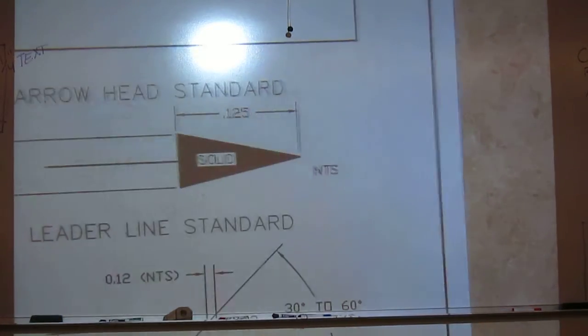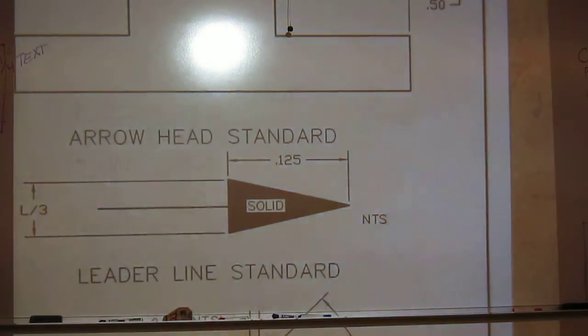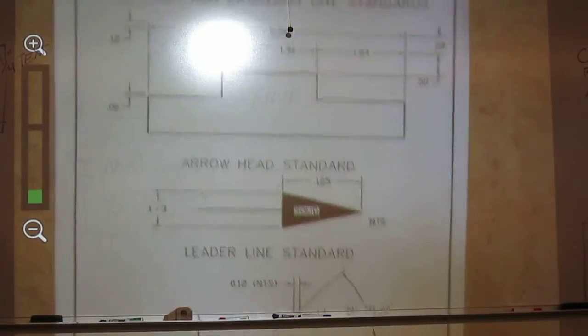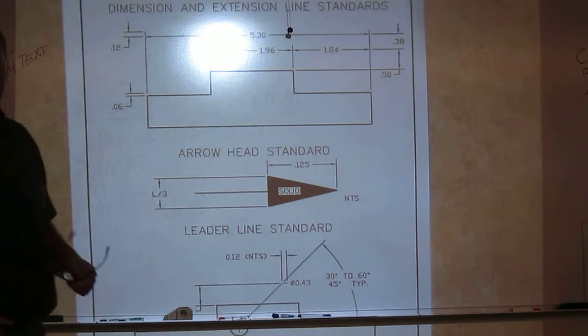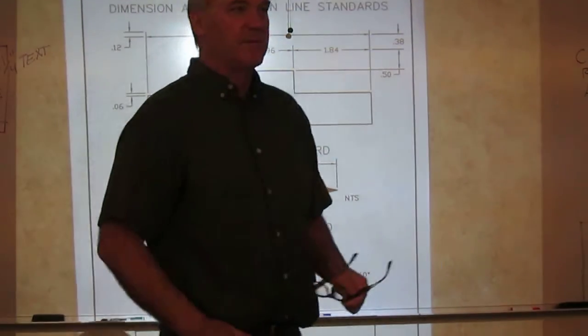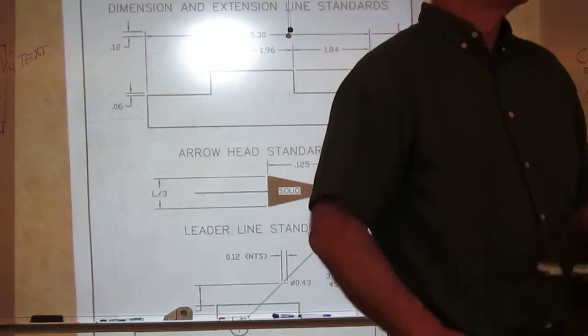And I'm going to go to this sheet that was attached to your syllabus. Now you may want to back this up with page 507. Page 507 is the alphabet of lines back in chapter 10.